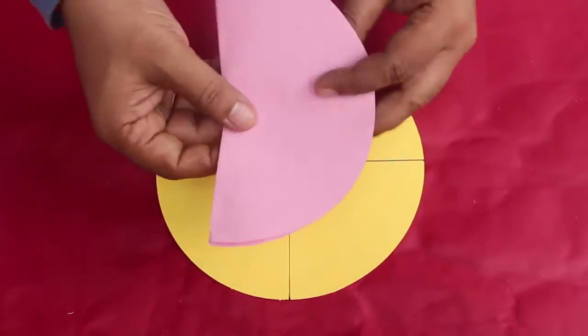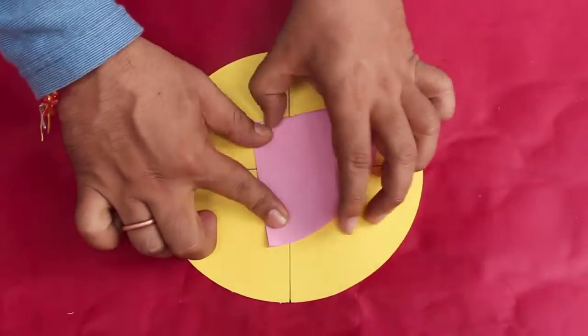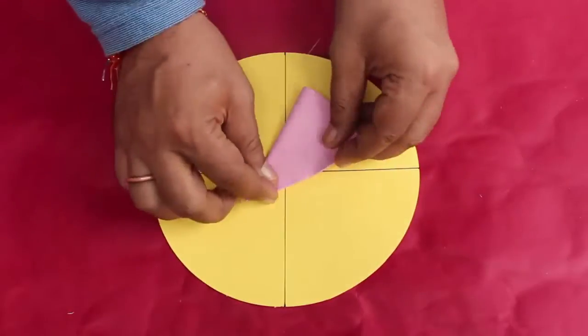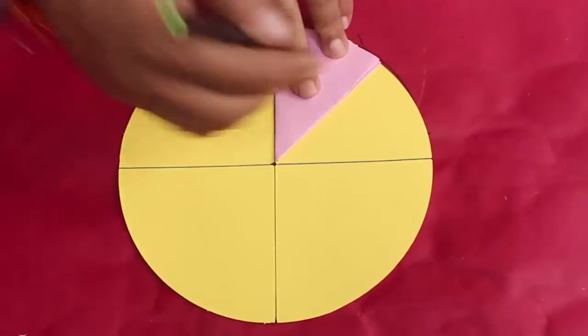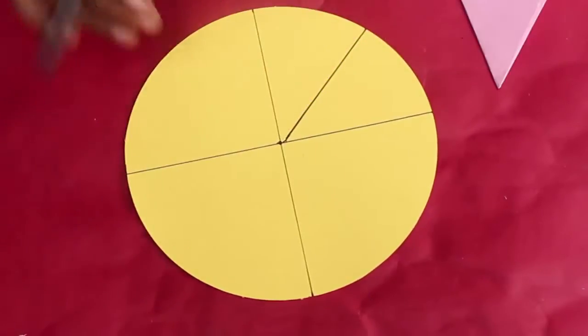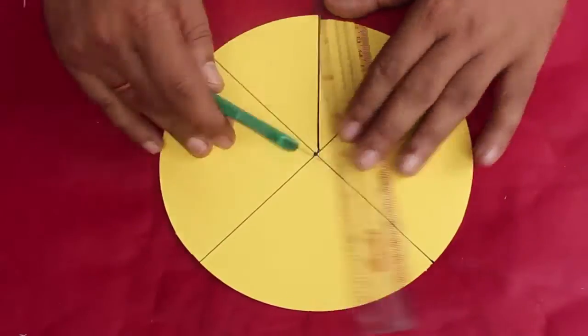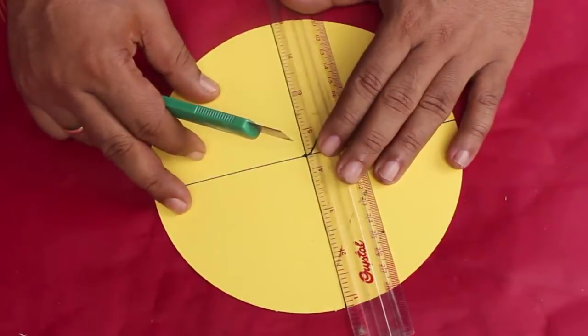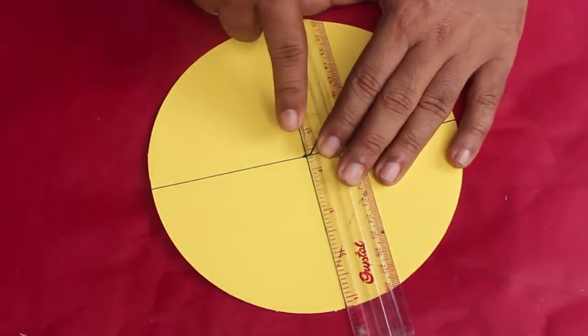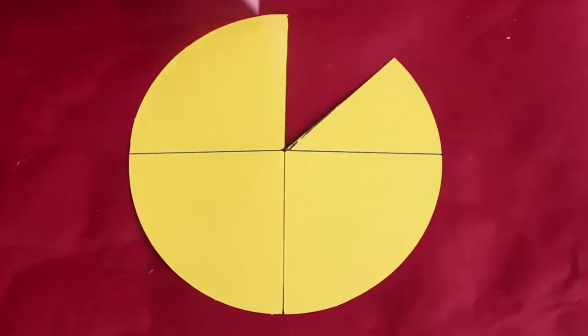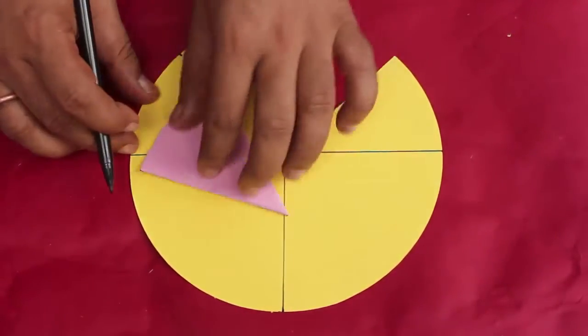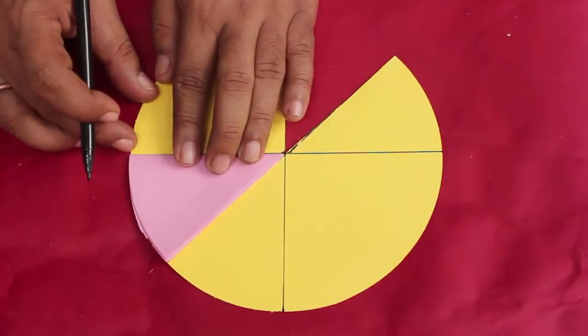We could have folded the thick paper itself, but then making a cone would have been difficult because of folds. Now we have this one-eighth part of a circle, and using this we divide the circle in eight equal parts, and then we cut out one part. We now have a sector or part of a circle.